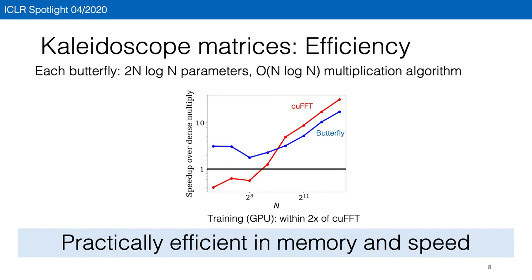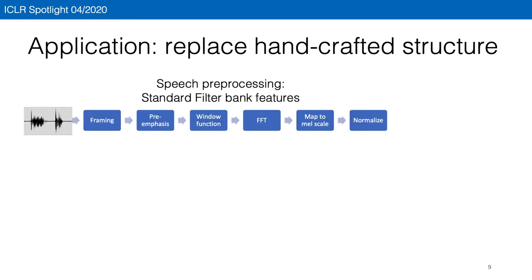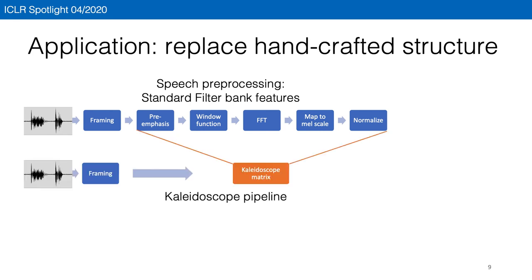Now I'll show a cool application where kaleidoscope matrices can simplify the speech preprocessing pipeline. In the standard filter bank pipeline to featurize speech signals, the raw input goes through six hand-engineered steps. However, we can replace five of these steps with just a kaleidoscope matrix and learn it along with a downstream model in an end-to-end manner.